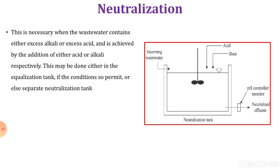If excess acidic industrial wastewater is present, we have to neutralize it by adding some alkaline substance. This is carried out in the neutralization tank or in the same equalization tank. If the wastewater has excess alkali, acid should be added so that the water becomes neutral, and such neutralized effluent is further treated.